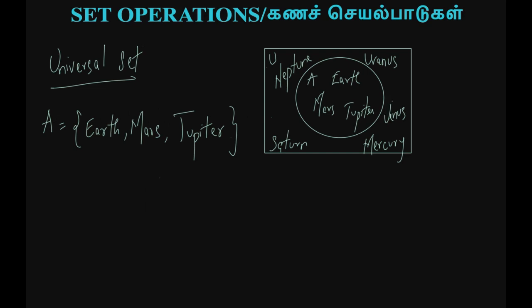In 2006, Pluto was considered a planet — so Pluto is one planet in our example. This is the Universal Set. It is a set which contains all the elements of all the sets under consideration. We will talk about a set of elements — Earth, Mars, Jupiter — and the Universal Set contains all the planets.